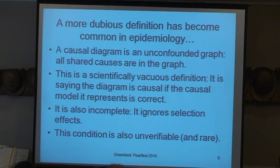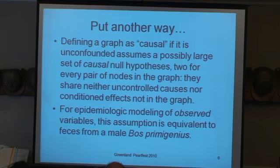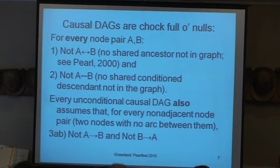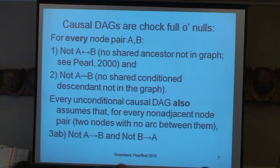All it's saying is that the diagram is causal if the causal model it represents is correct — that doesn't make any sense the way it's put. It's also incomplete in that it ignores selection effects, and it's also an unverifiable and presumably very rare condition. To define a graph as causal if it's unconfounded assumes a possibly large set of causal null hypotheses — for every pair of nodes in the graph, they share neither uncontrolled causes nor conditioned effects not in the graph.